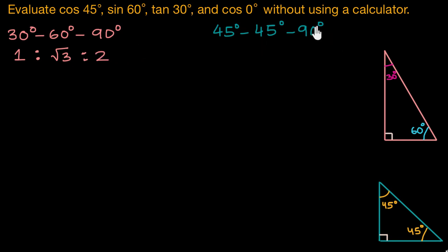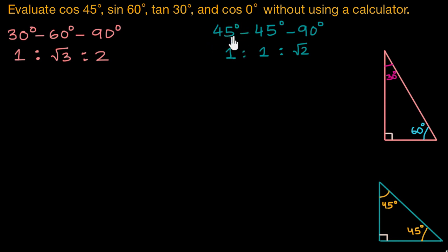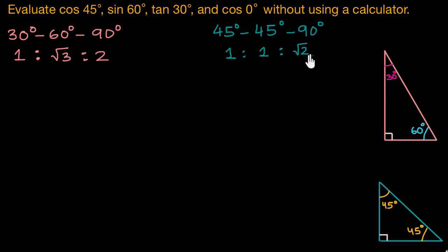And for a 45-45-90 degree triangle, the ratio of the sides is 1 : 1 : √2. Meaning if the side opposite to the 45 degree angle is 1 unit, then the side opposite to the other 45 degree angle will also be 1 unit, and the side opposite to the 90 degree angle — the hypotenuse — would be √2 units.